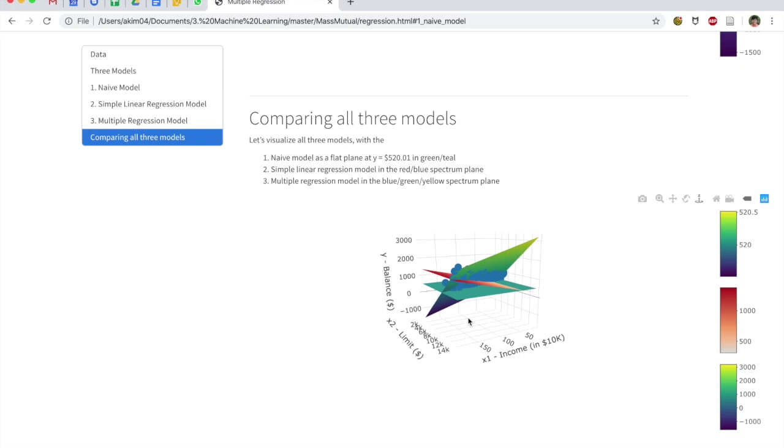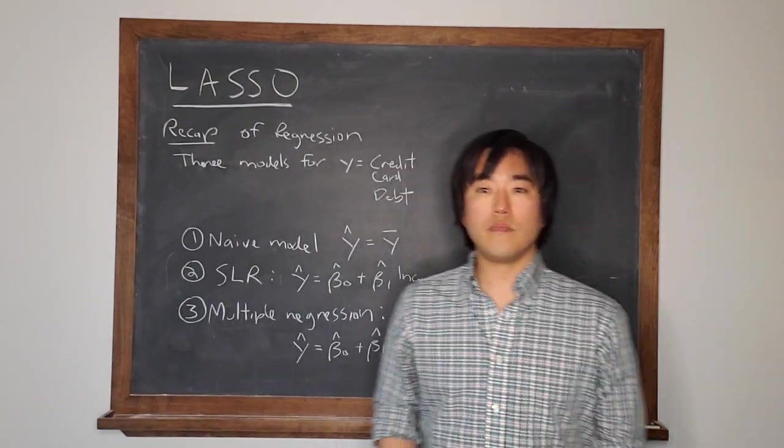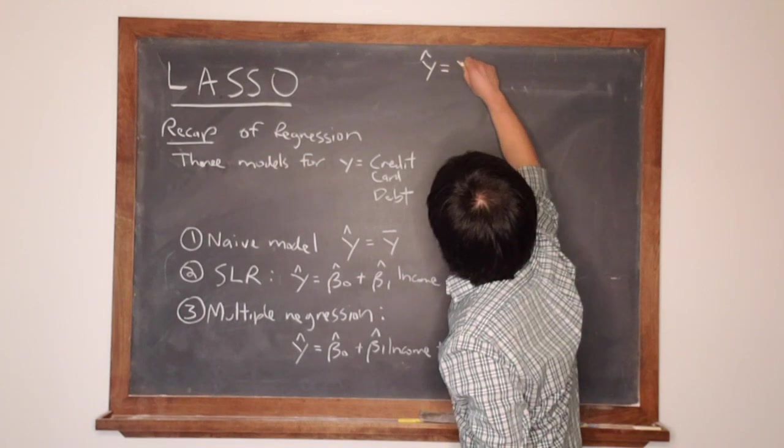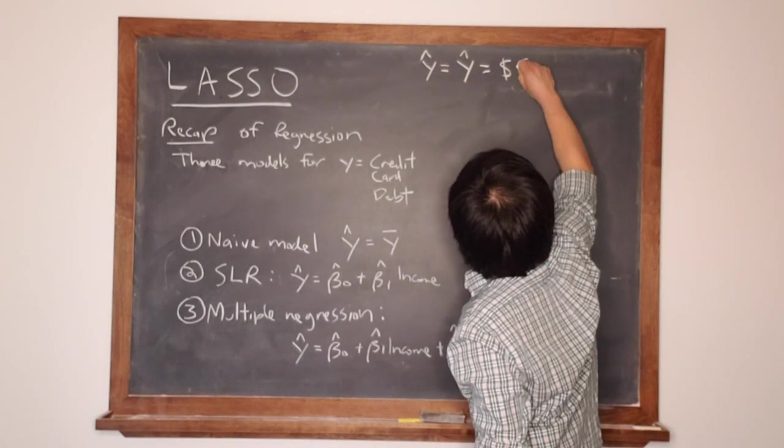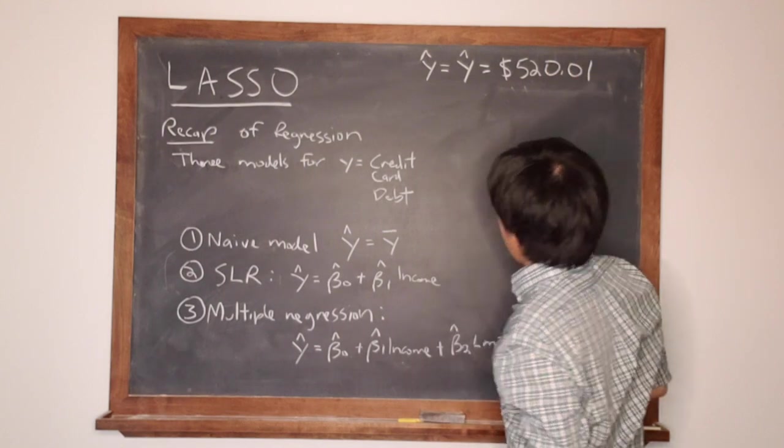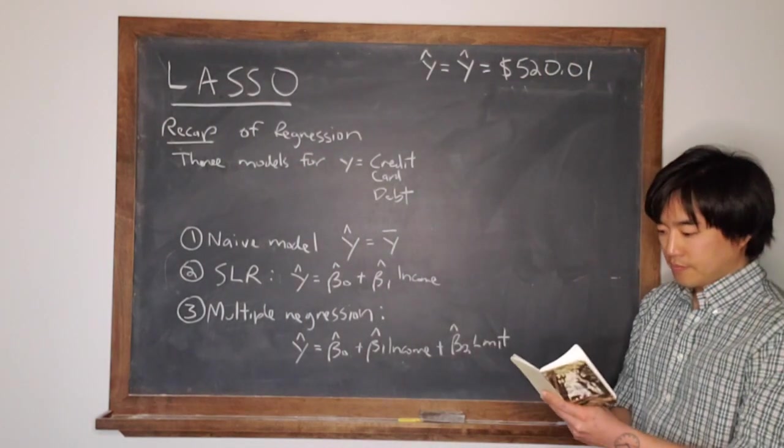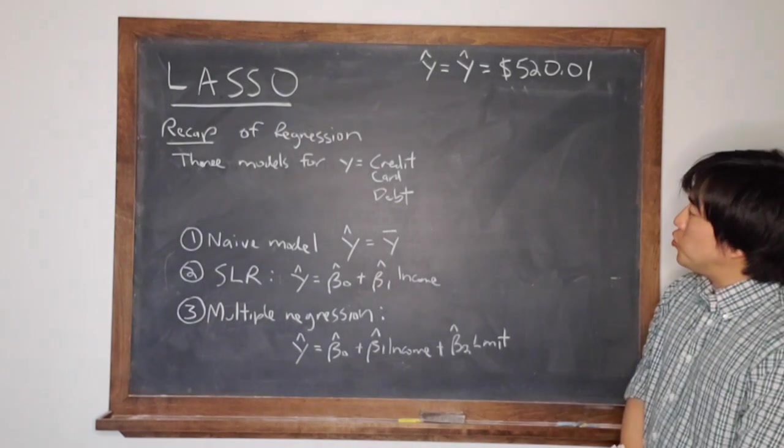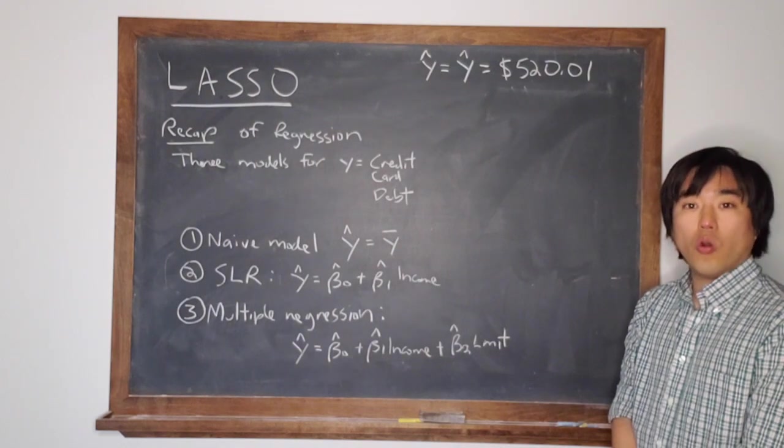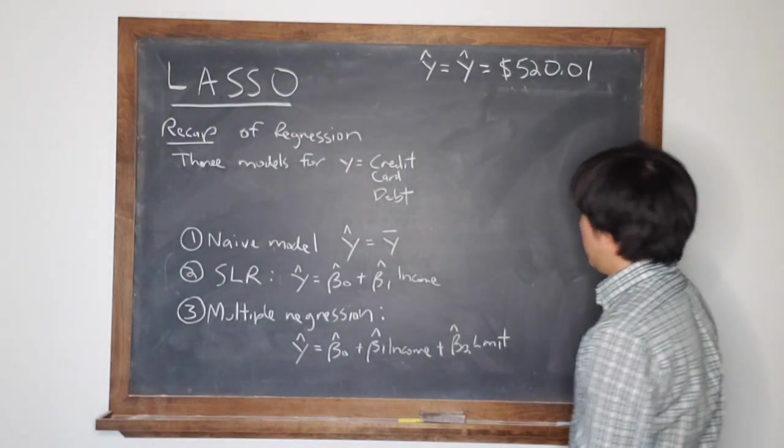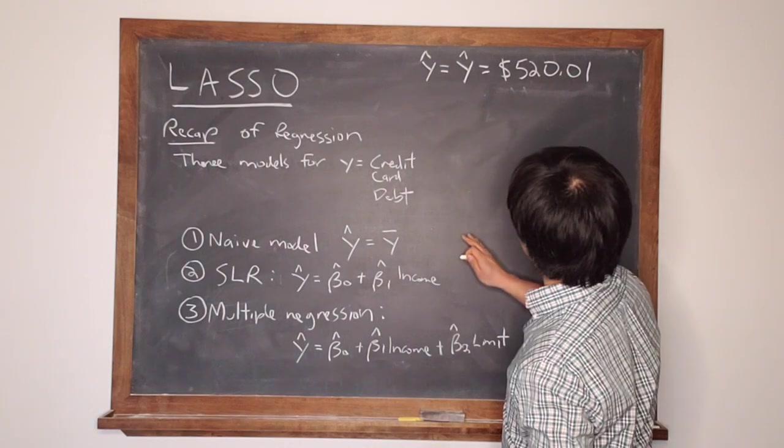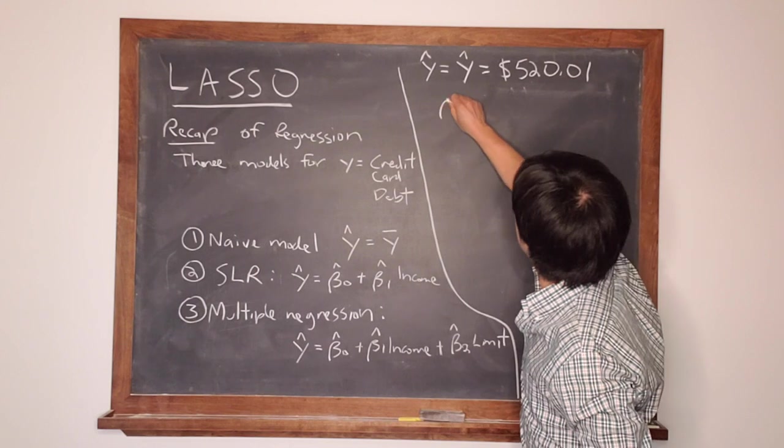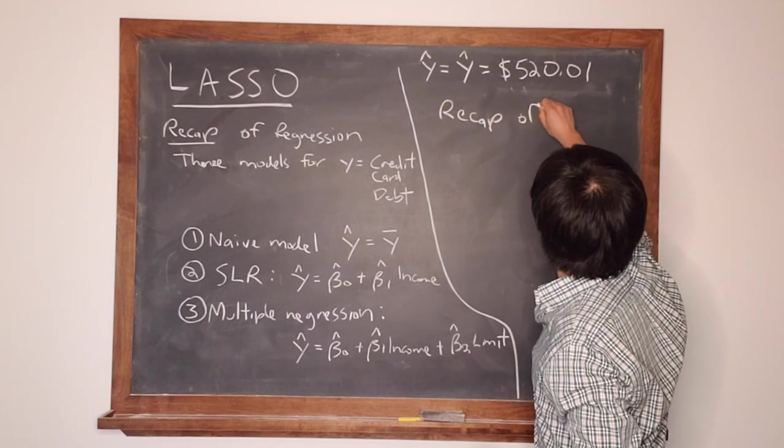Now, let's come back to the blackboard. So remember folks, I want you to remember that value in particular, $520.01. Okay, now let's do a recap of CART or classification and regression trees. So I think I can fit this in over here. I'm going to just draw a little line.